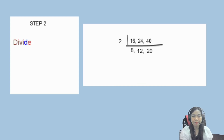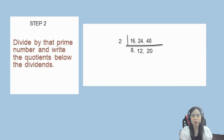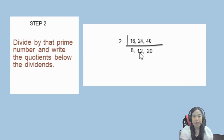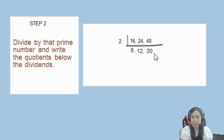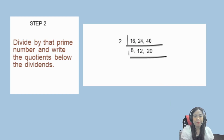Step 2: divide by the prime number and write the quotients below the dividends. So, ito yung ating quotients — sinulat lang natin sa ilalim ng numbers na ating given. And then, iisip ulit tayo ng prime number na divisible dito sa ating quotients. We have 8, 12, and 20 — divisible sila sa 2, so pwede pa natin i-divide into 2. 8 divided by 2 is equals to 4, 12 divided by 2 is equals to 6, 20 divided by 2 is equals to 10.